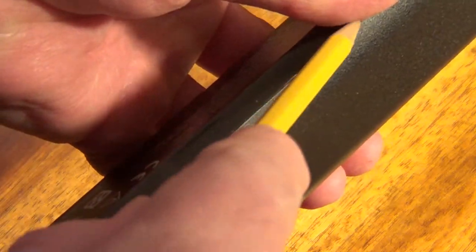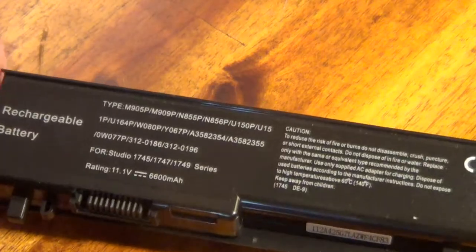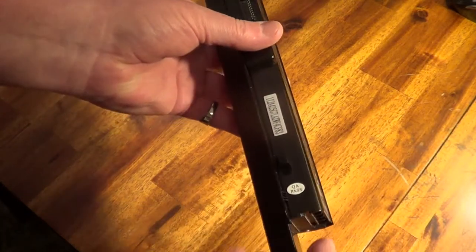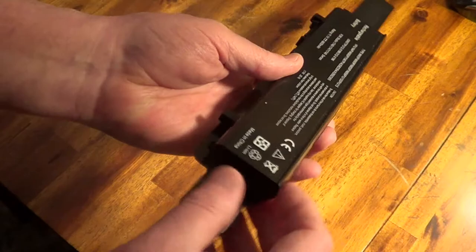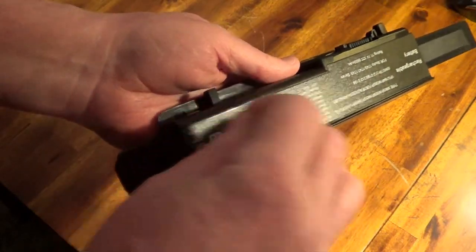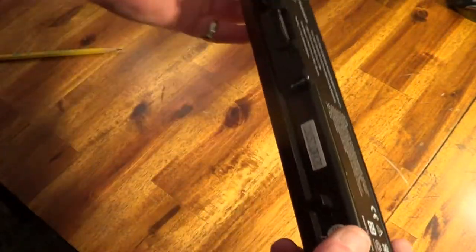That's where we need to split this thing apart, right there, and we have to be really careful. The tricky part is getting that initial split in the seam started. From there, it should come open fairly easily.